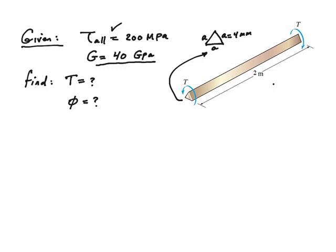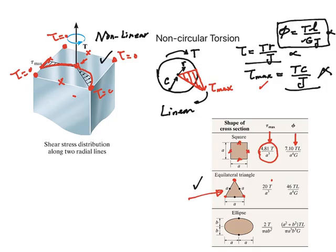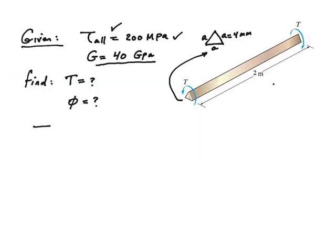Based on that, we want to find the torque needed to bring it to this stress. And then what would be the angle of twist if we apply a torque like that? So this is a very simple problem. Going back to our formula here for tau max, here's the formula, 20 times T divided by a cubed for tau max.